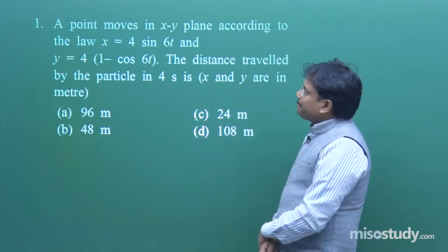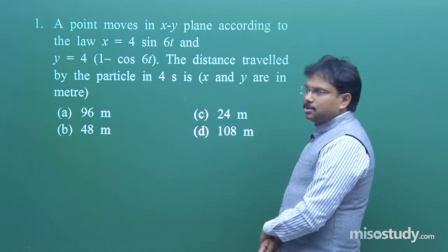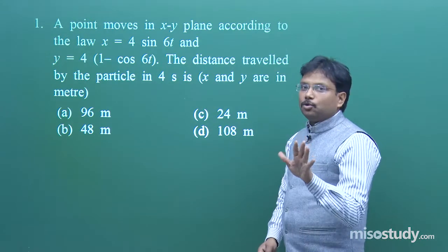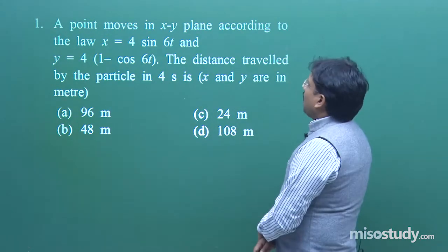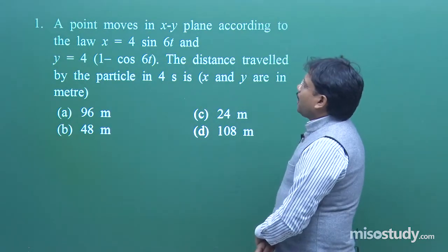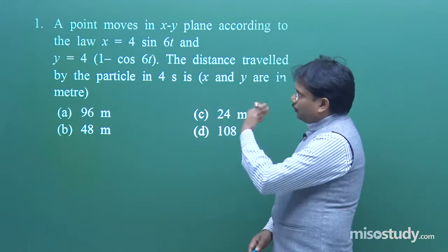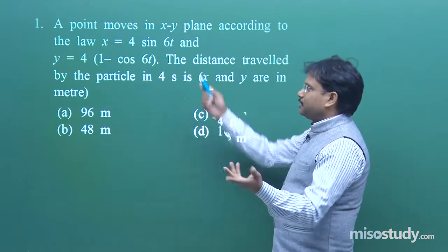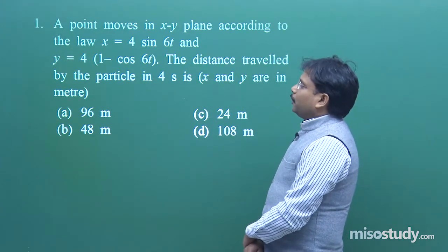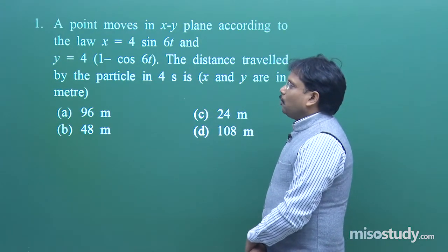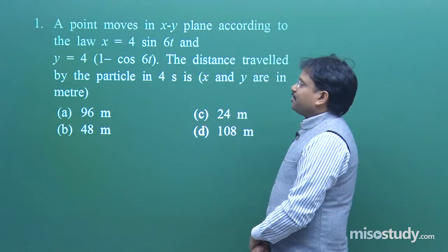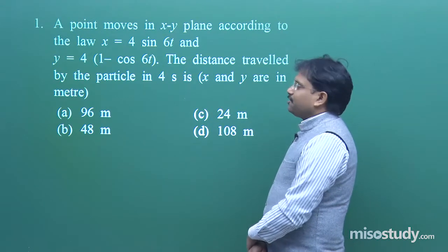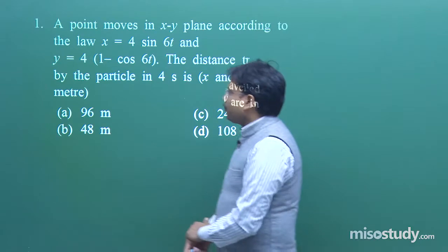The question is: a point — maybe an insect or something — moves in the xy plane. So two-dimensional motion is going to be there according to the equations: x = 4 sin(6t) and y = 4(1 − cos(6t)). The distance travelled by the particle in 4 seconds is how much?